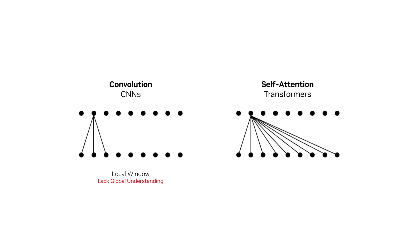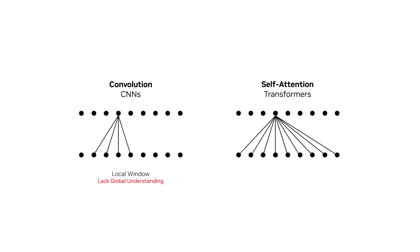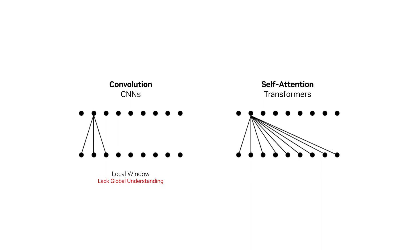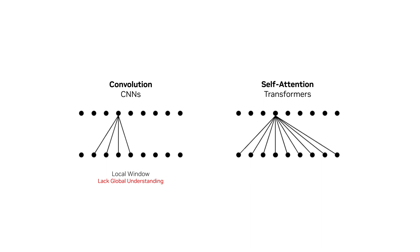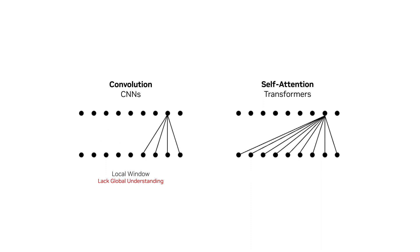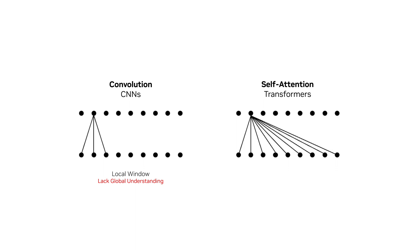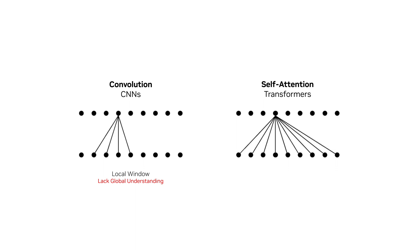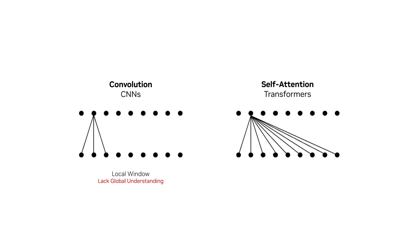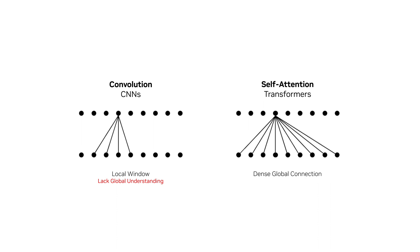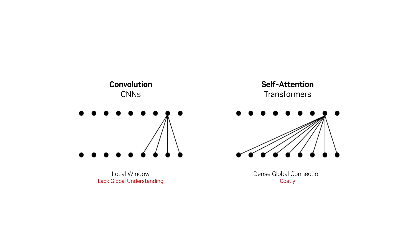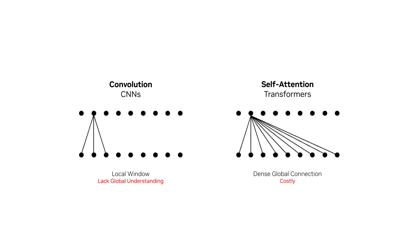Vision Transformer, on the other hand, uses self-attention — a mechanism in deep learning that learns to attend to different parts of the input and represents their relationships. Self-attention enables more global understanding, but it can be costly in both data and compute power.